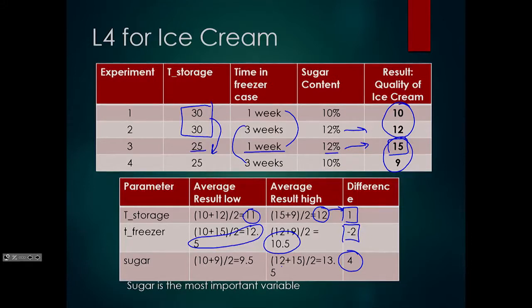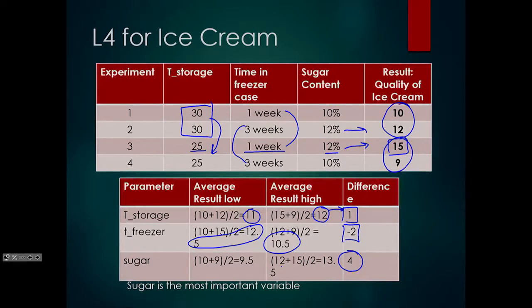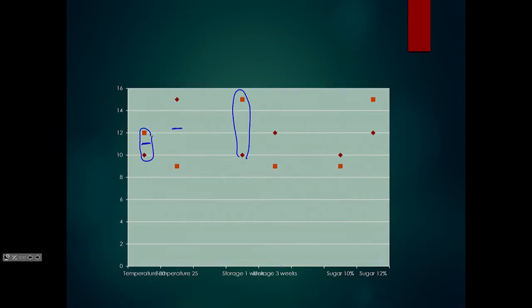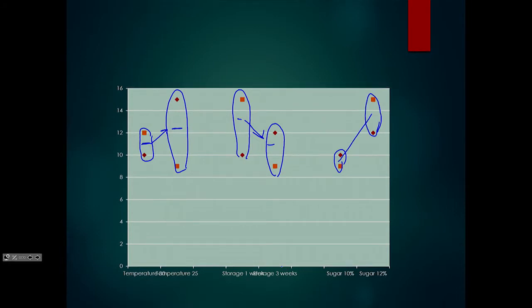It seems we probably could have gotten more information by doing the additional four experiments to cover all possibilities. That's definitely true when we're only talking about three parameters — it doesn't seem to have a major efficiency added there. Looking at the graphs for each variable, we plot the results and can see there is a difference in how storage temperature affects things, but that difference isn't in a direction we consider positive, and we can also see the difference in how things are adjusted by sugar content.